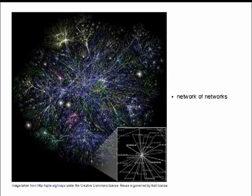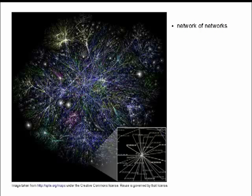The diagram you're looking at was created by crawling the web and recording each point or address on the Internet. It was done several years ago, about five or six years ago, and it's available at opti.org/maps. It illustrates the richness of the Internet and various subnets or domains are represented by different colors on the map, showing some of the characteristics of the network.